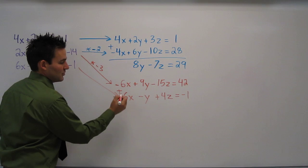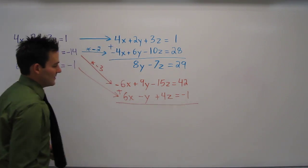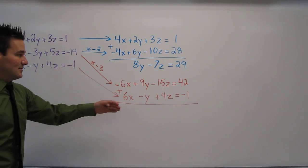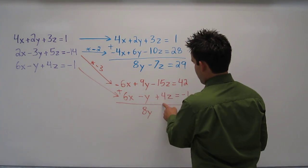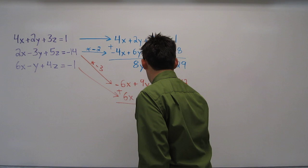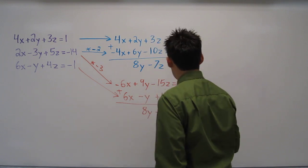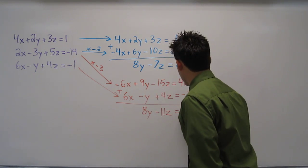When I add these two equations, I get 0x again plus 8y, and right here I get minus 11z and finally 41.